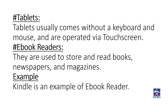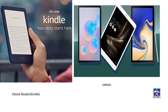Here on the left side you can see an ebook reader known as Kindle, which is famous for reading magazines, newspapers or any kind of stories. On the right side we have tablets. Both are used for similar purposes but Kindle generally focuses on reading.